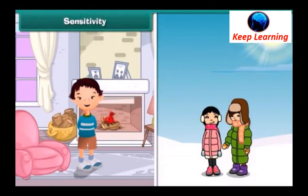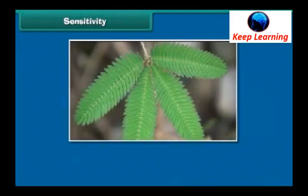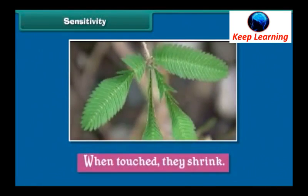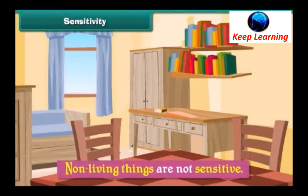All living things can sense and feel the changes around them. This ability to sense and feel the changes in the environment is called sensitivity. The leaves of the touch-me-not plant are sensitive to touch — when touched, they shrink. Non-living things are not sensitive.